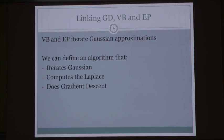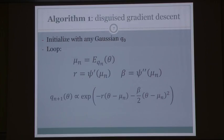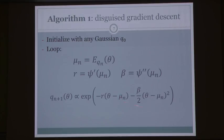Variational Bayes and expectation propagation both iterate Gaussian approximations to the target distribution p. I'm going to define a new algorithm — algorithm number one — that iterates Gaussian approximations and basically performs a variant of gradient descent. I initialize it with any Gaussian q0, then in the loop I compute the mean of the current Gaussian approximation, compute psi prime and psi double-prime at that mean, giving a quadratic (Taylor) approximation to psi around mu_n. Taking the exponential of that quadratic gives a new Gaussian approximation, and I iterate.